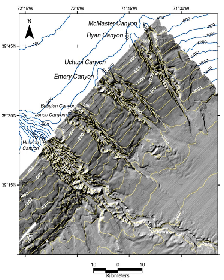A submarine canyon is a steep-sided valley cut into the seabed of the continental slope, sometimes extending well onto the continental shelf, having nearly vertical walls, and occasionally having canyon wall heights of up to 5 kilometers from canyon floor to canyon rim, as with the Great Bahama Canyon.